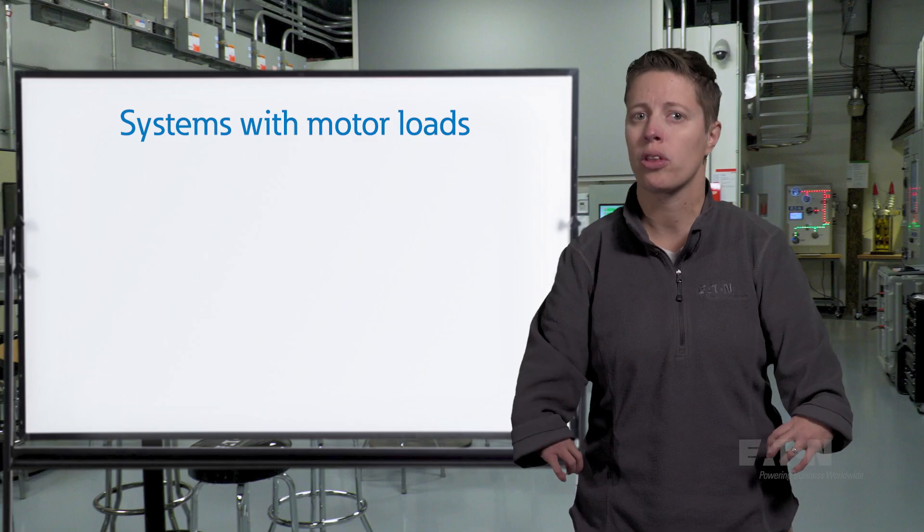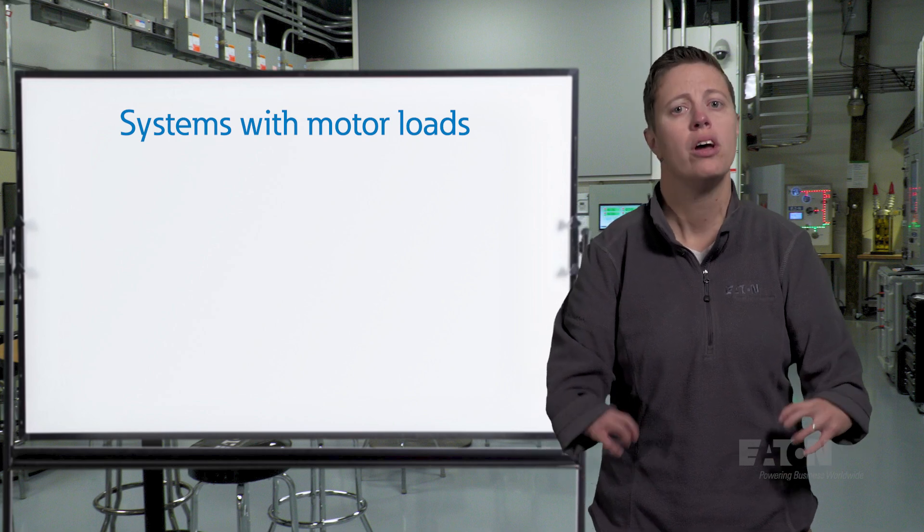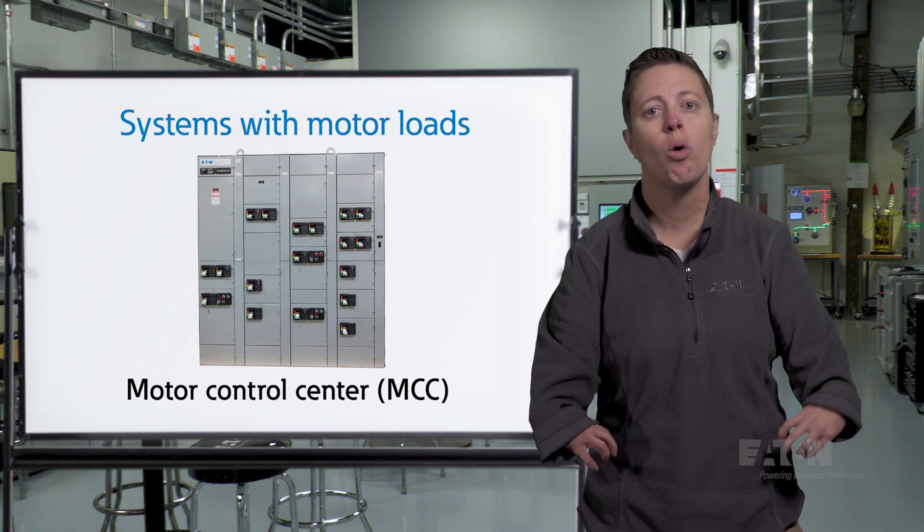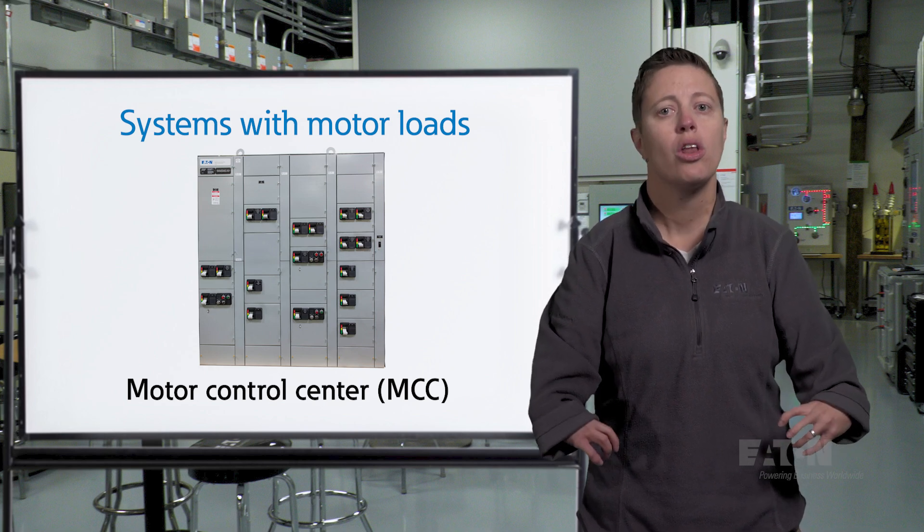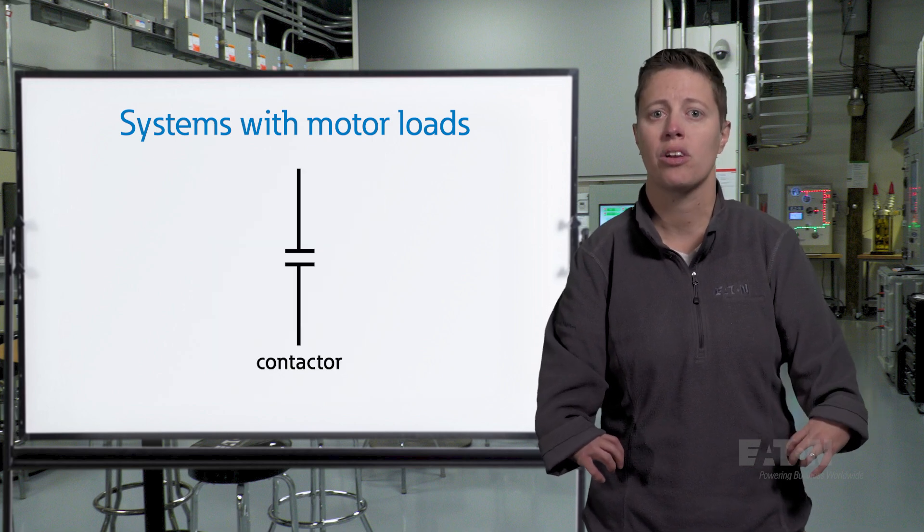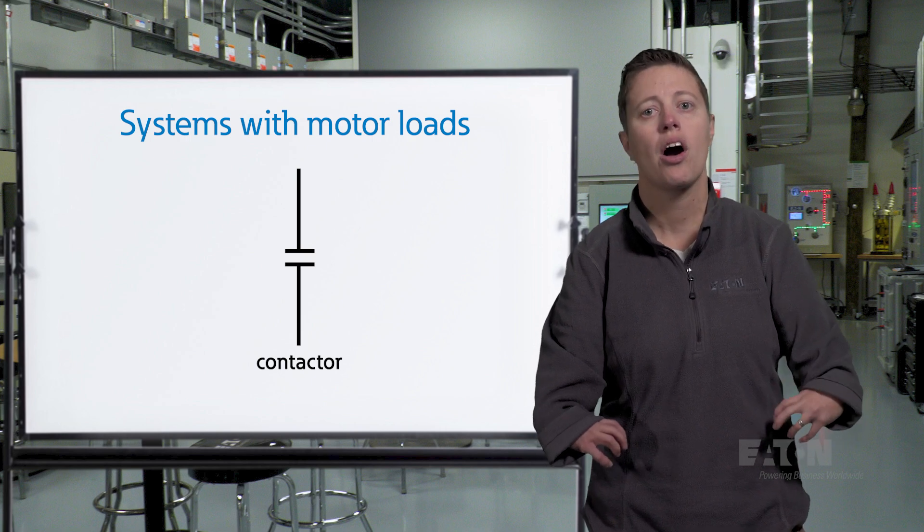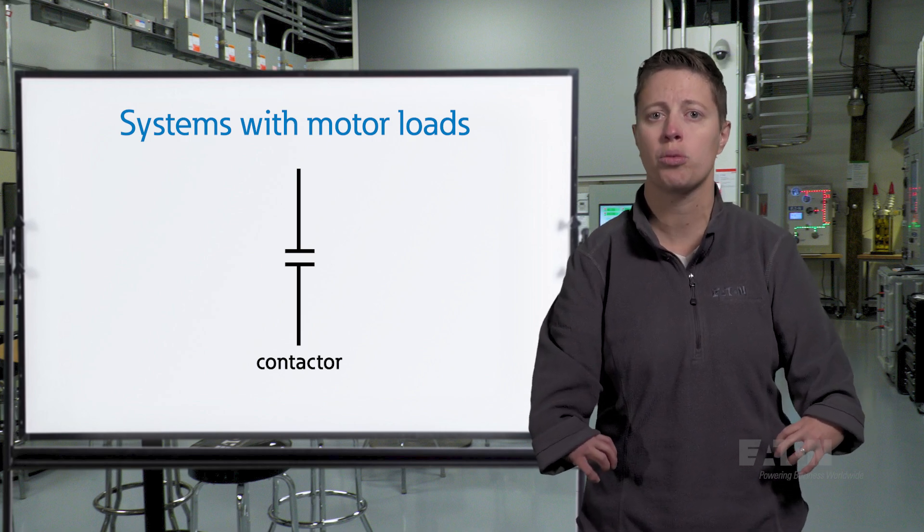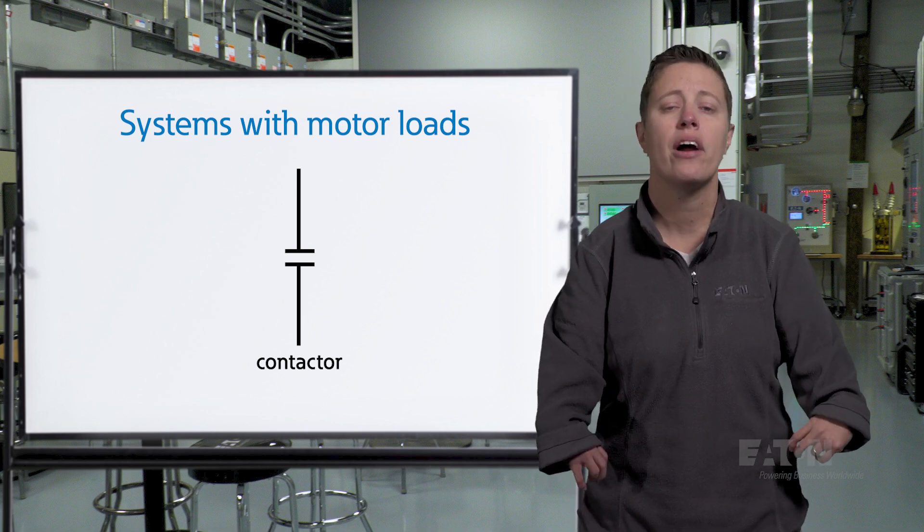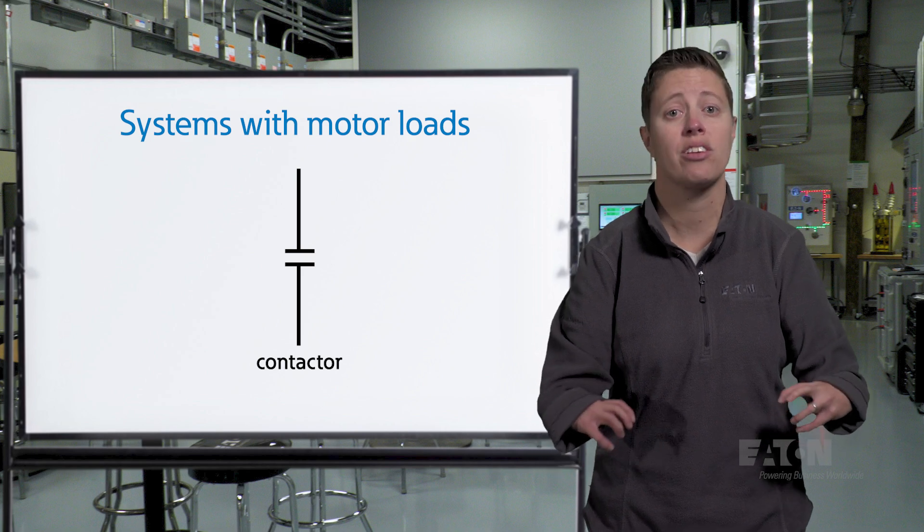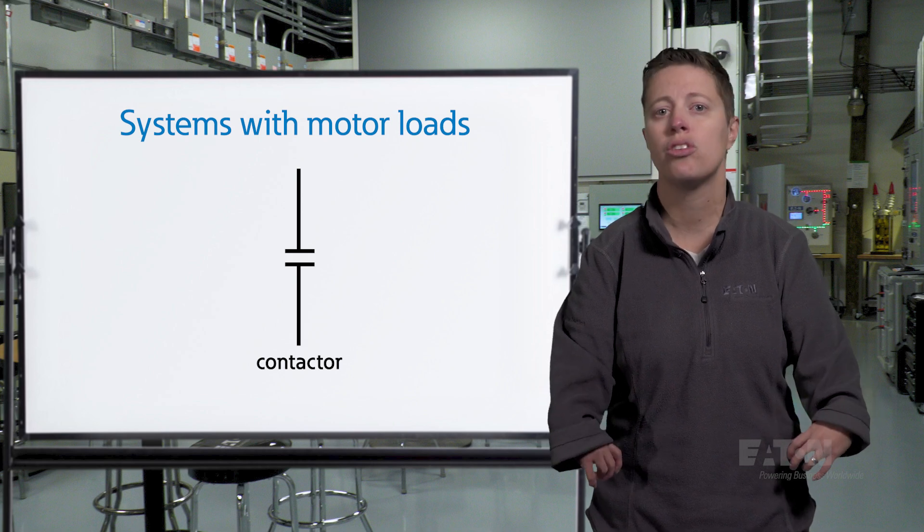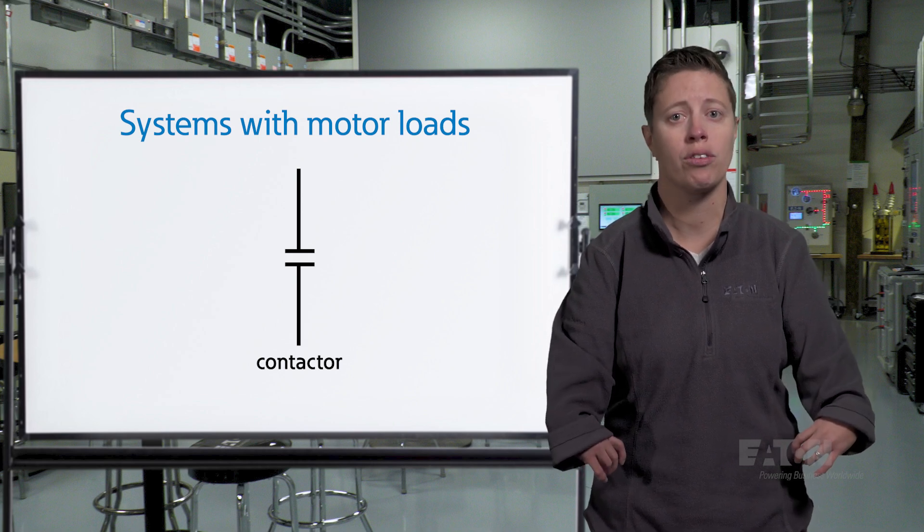Systems with motor loads may use specific equipment to control them, which may reside in a motor control center, often abbreviated MCC, or in a standalone enclosure. Look for these items just upstream of a motor load. Parallel lines perpendicular to the bus represent a contactor. A contactor is a device used to switch an electrical circuit on or off, electrically or mechanically. The parallel lines represent the contactor's contacts in the open position. A contactor can open and close a circuit, but does not provide overcurrent or overload protection.